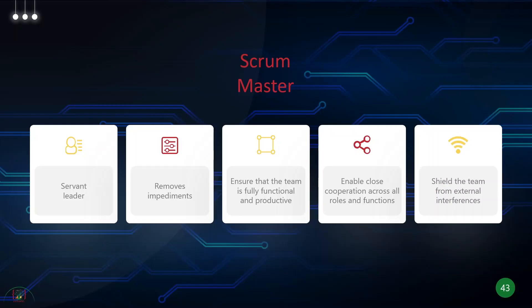However, the Scrum Master is not a manager. They don't have the authority to hire or fire anybody. They cannot make decisions on skill allocation or task allocation, because if you remember, we talked about the Scrum team being self-organizing — so the Scrum Master should not allocate tasks to the Scrum team. The Scrum team should be able to pick them up themselves. The Scrum Master shouldn't estimate stories on behalf of the team; however, they can facilitate the ceremonies and they can participate in story estimation.